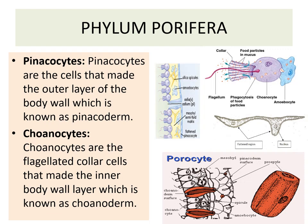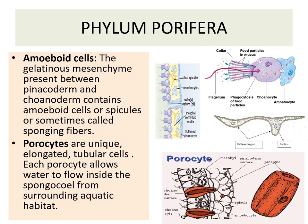In phylum Porifera, a large number of cell types are present. The first type is pinacocytes — cells that make up the outer layer of the body wall known as pinacoderm, and they have a bulge and a tile-like appearance. Second are coanocytes — flagellated collar cells that make up the inner body wall known as coanoderm. Third are amoeboid cells; the gelatinous mesenchyme present between the pinacoderm and coanoderm contains amoeboid cells, spicules, or sometimes called spongin fibers.